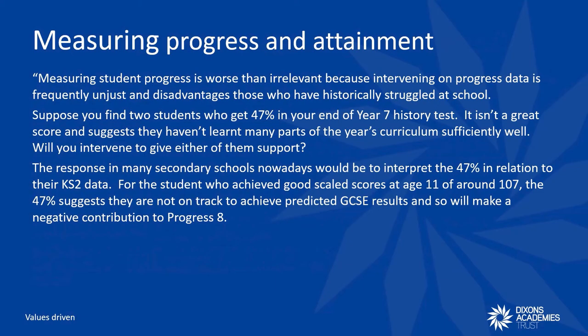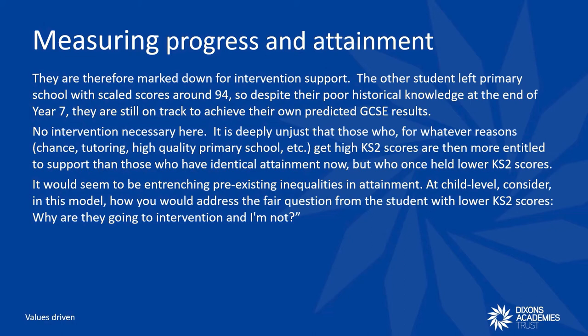He said: 'Measuring student progress is worse than irrelevant because intervening on progress data is frequently unjust and disadvantages those who have historically struggled at school. Suppose you find two students who get 47% in your end of Year 7 history test. It isn't a great score and suggests they haven't learnt many parts of this year's curriculum sufficiently well. The response in many secondary schools nowadays would be to interpret the 47% in relation to the Key Stage 2 data. For the student who achieved good scale scores at age 11 — around 107 for example — the 47% suggests they are not on track to achieve predicted GCSE results and so will make a negative contribution to Progress 8. Due to this, they are marked down for intervention support.'